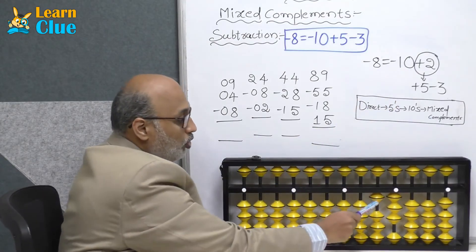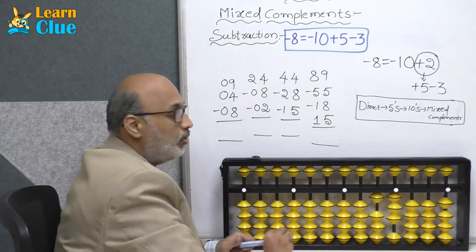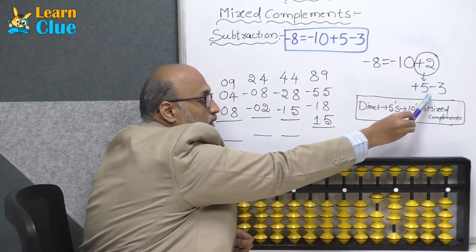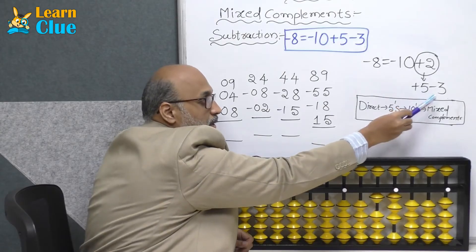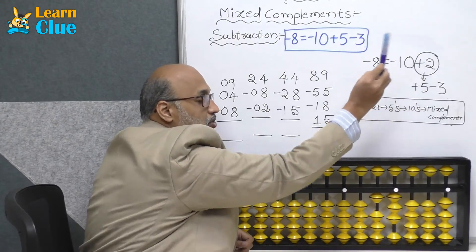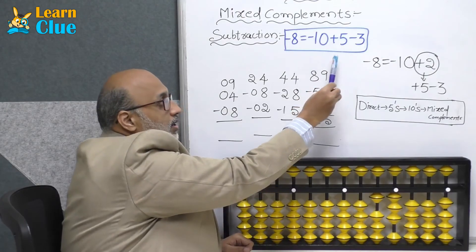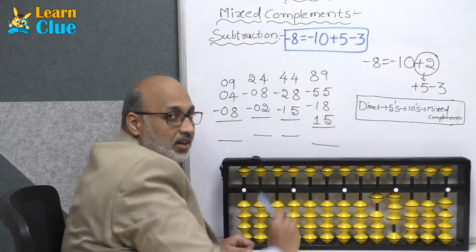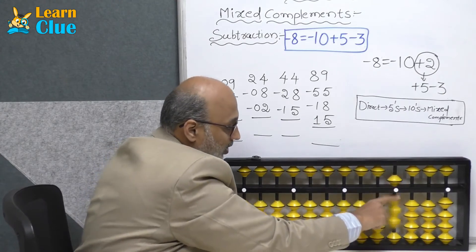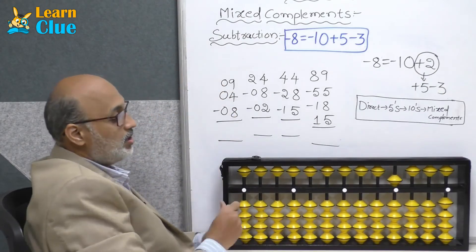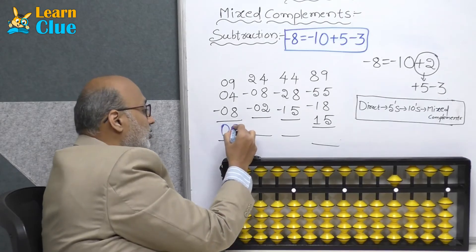Here we can do minus 10 but not plus 2. So in the place of plus 2 we are taking the 5's complements technique: plus 5 minus 3. Replace this in the place of plus 2 — it becomes minus 10 plus 5 minus 3. Apply: minus 10 plus 5 minus 3. The answer is 5.